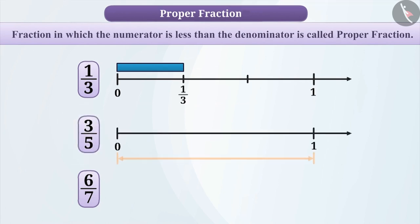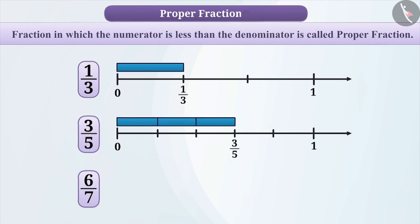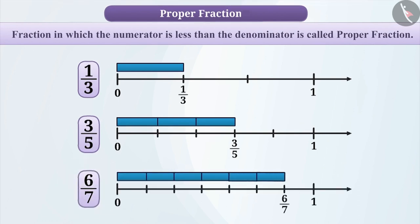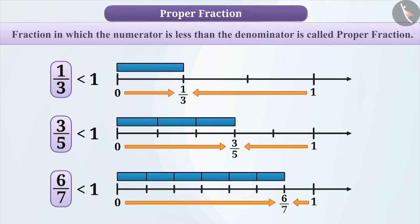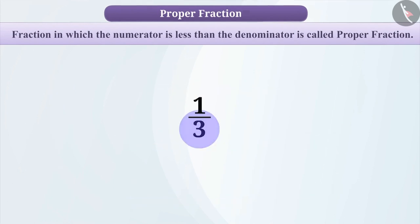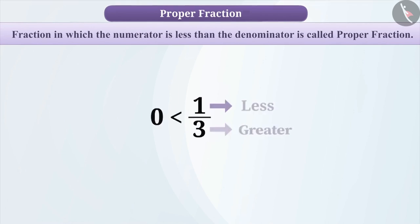Similarly, for 3 by 5, we will divide the unit length to five equal parts and take three parts of it as 3 by 5. Similarly, we can also express 6 by 7 on the number line. If we observe these representations on the number line, all fractions on the left side of 1 are smaller than 1, and all fractions on the right side of 0 are greater than 0. When the denominator is greater than the numerator, the value of the fraction is greater than 0 but less than 1.